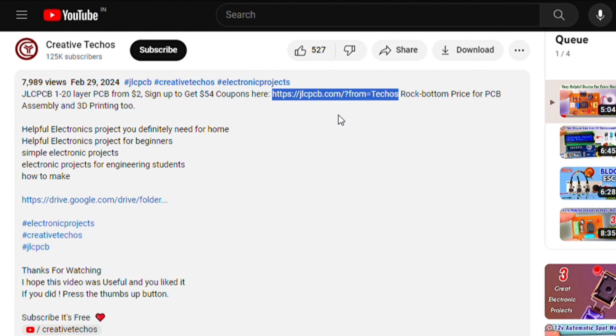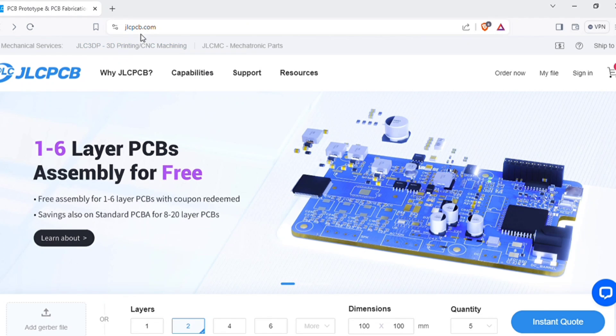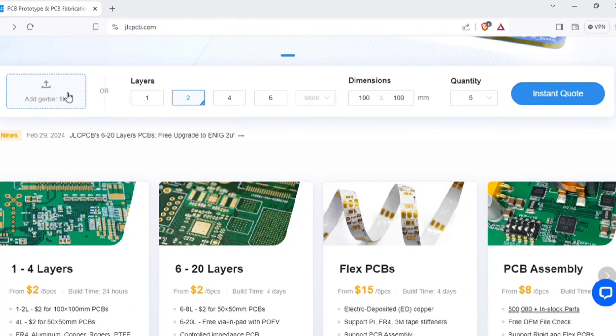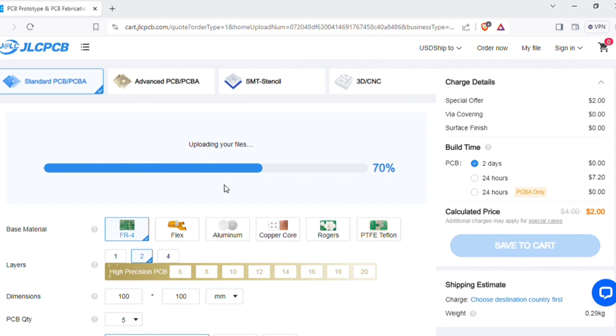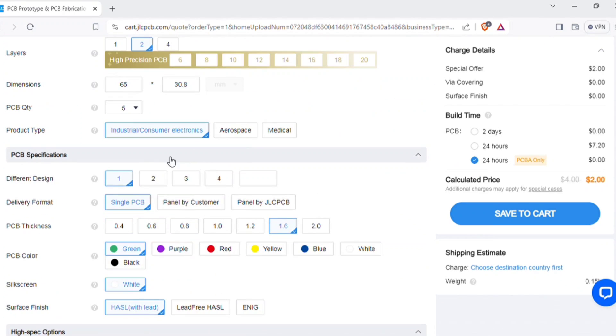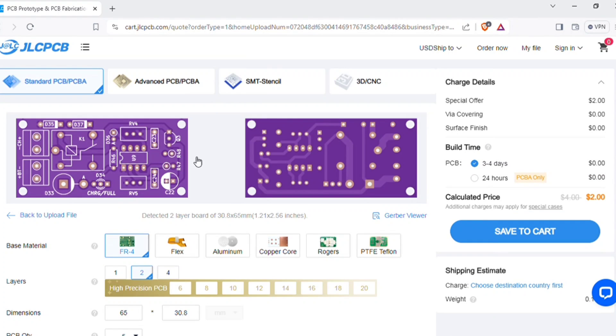Sign up with this link to get a discount coupon. On the home page of JLC PCB you can add the Gerber file I provided. After uploading you can see the preview of the PCB. You can also change quantity and the color of PCBs as per your requirements.